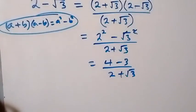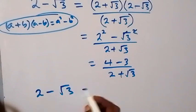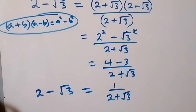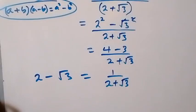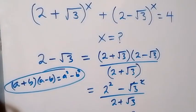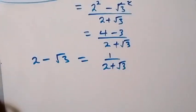Therefore, 4 minus 3 is 1, so we can say 2 minus √3 equals 1 over (2 + √3). So we can write 2 minus √3 like that, and the equation can now be written entirely in terms of 2 plus √3.